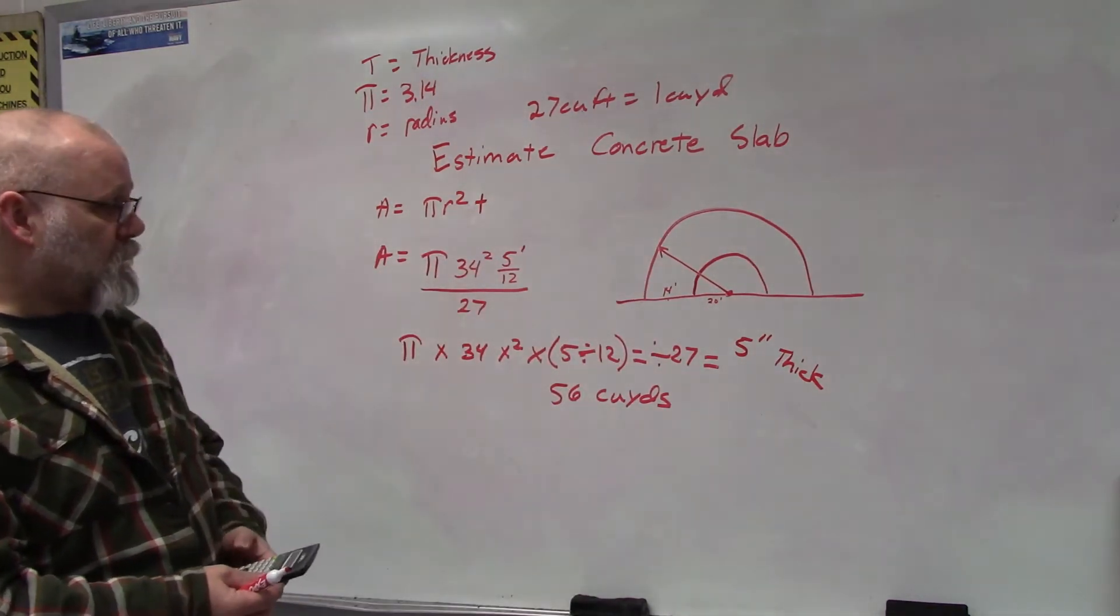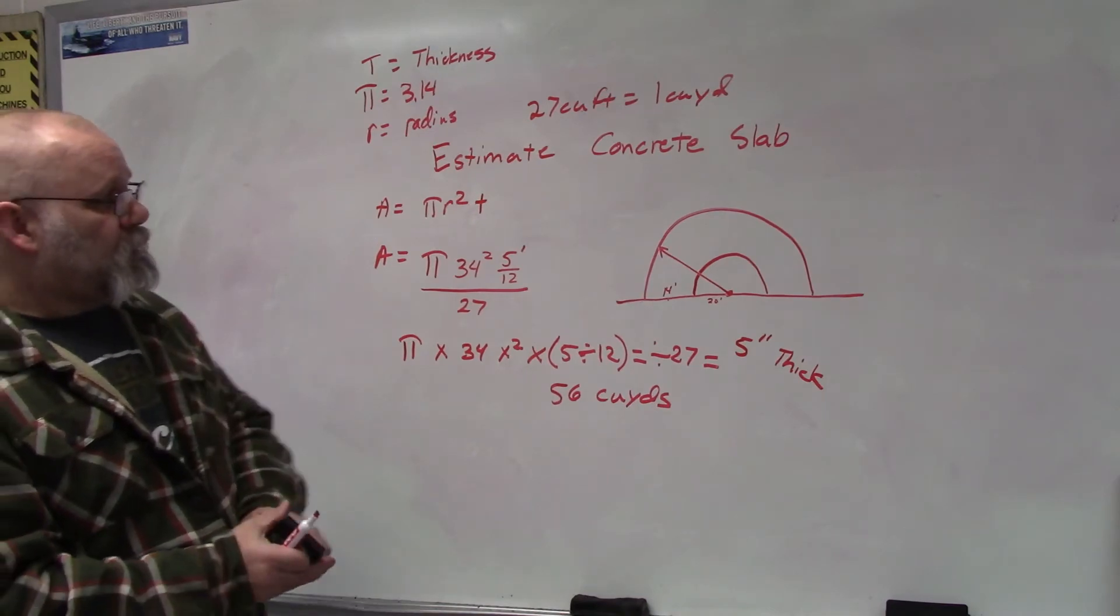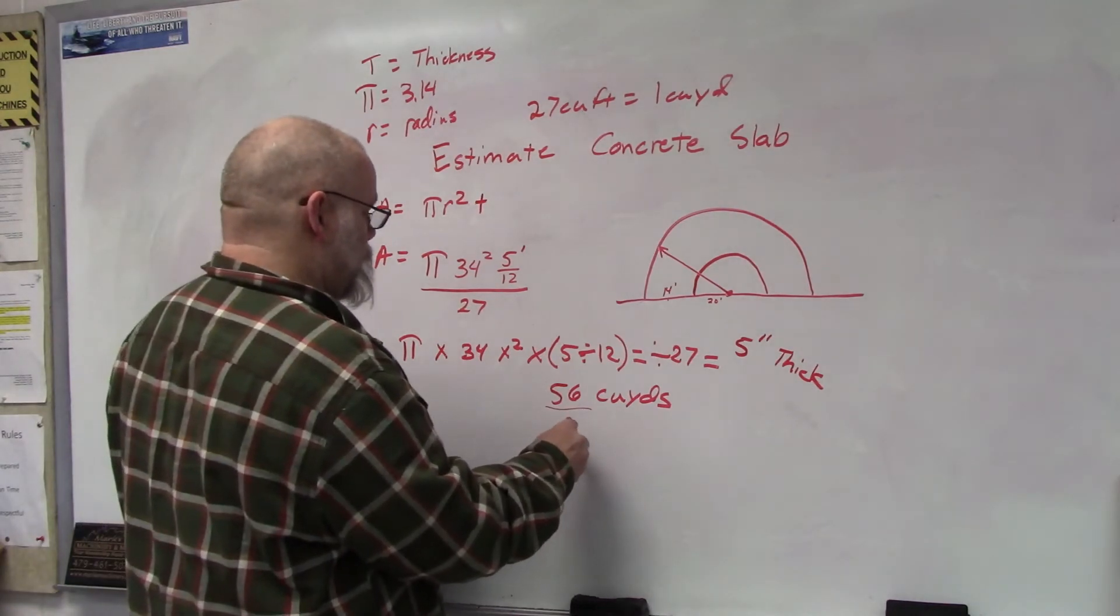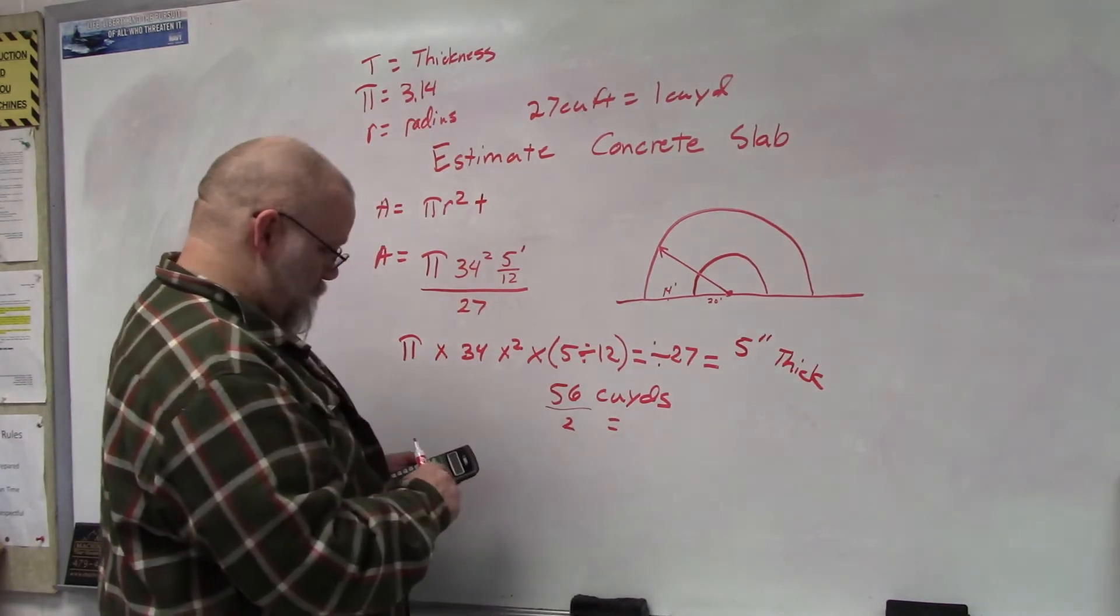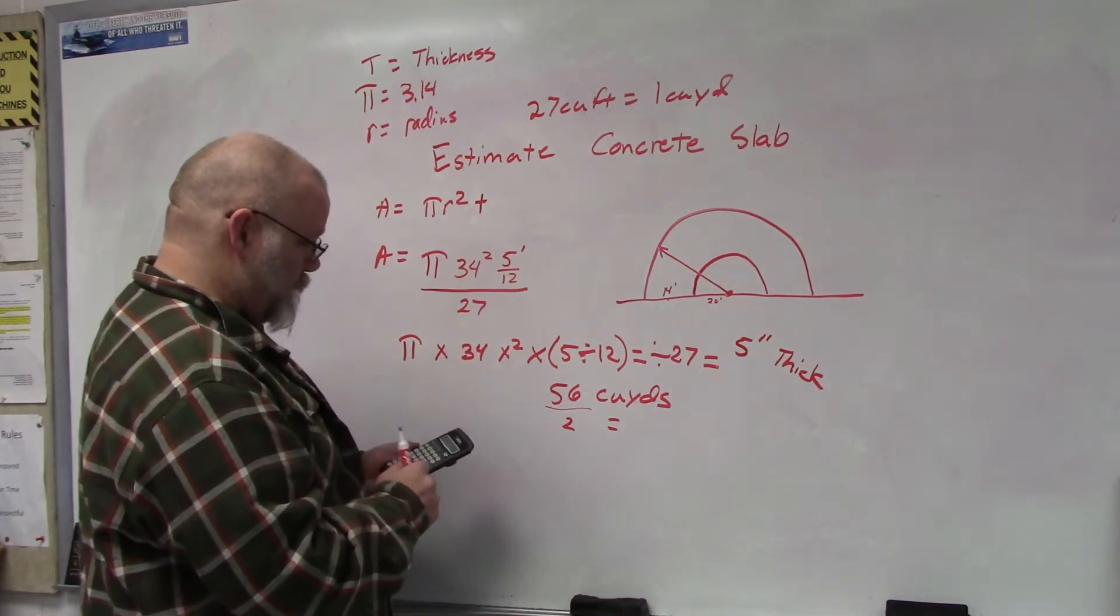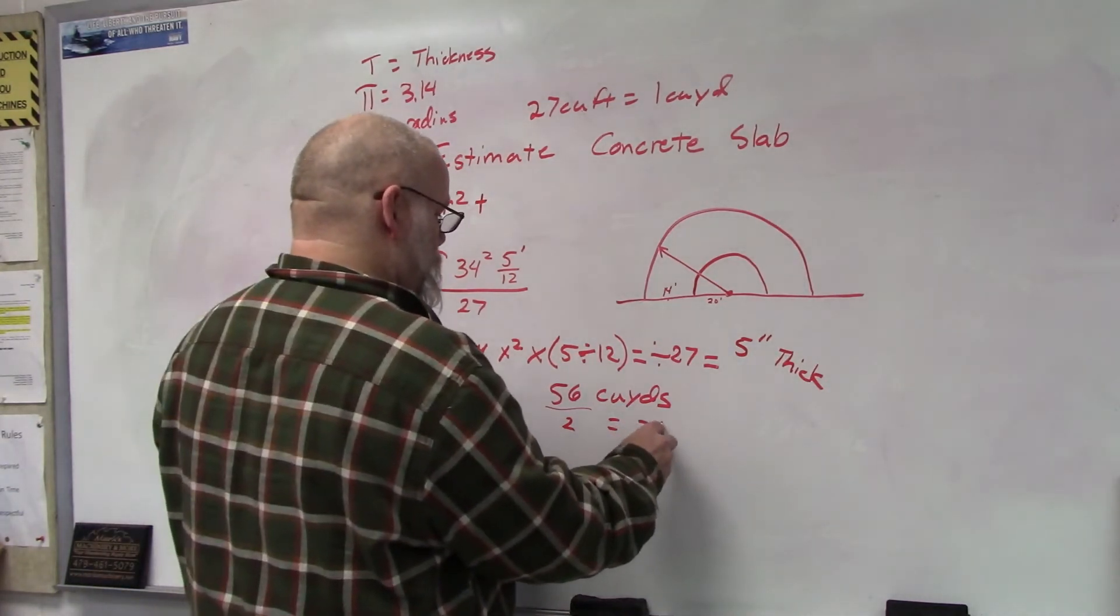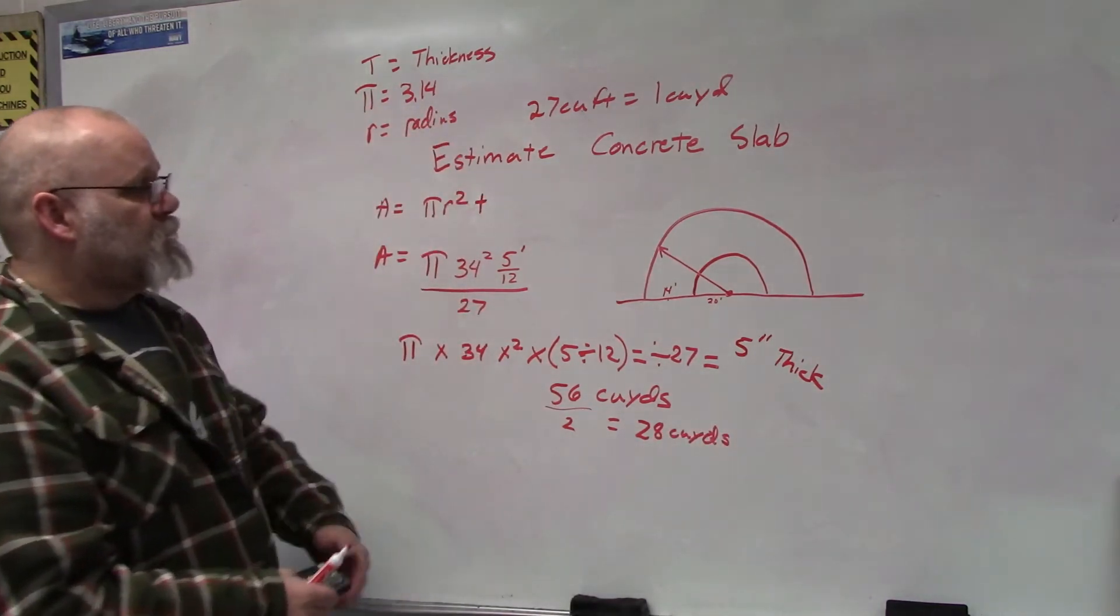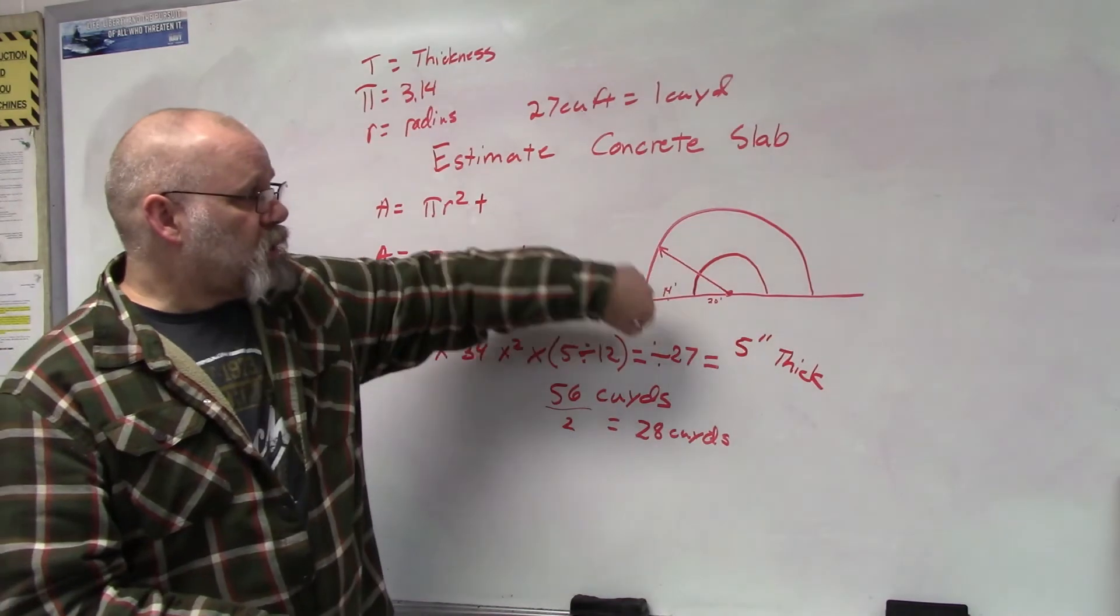But I only want half of the circle, so I'm going to divide this number by 2. So 56 divided by 2 equals 28 cubic yards. I got the whole circle, now I'm going to find out what this inner circle is.